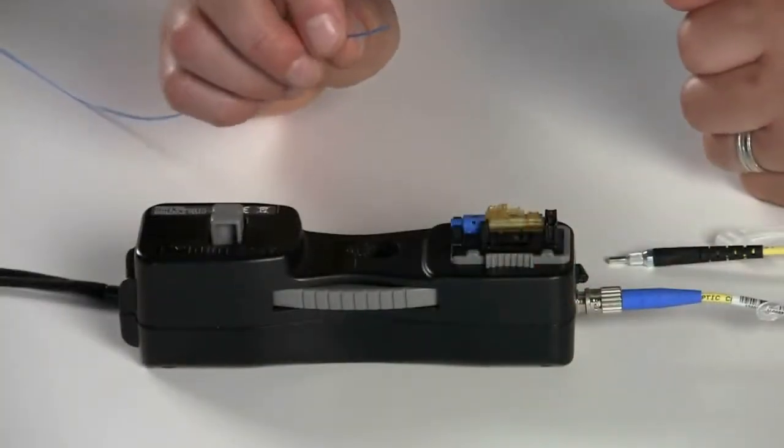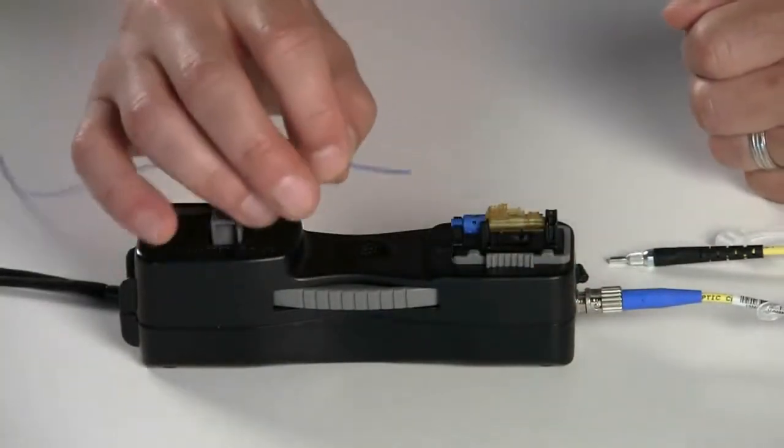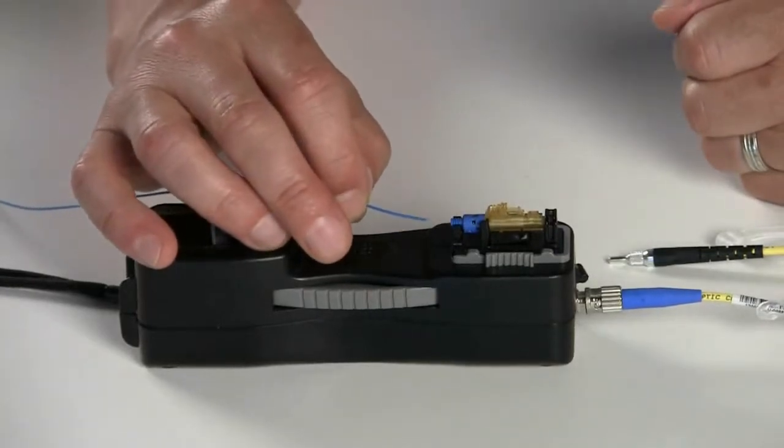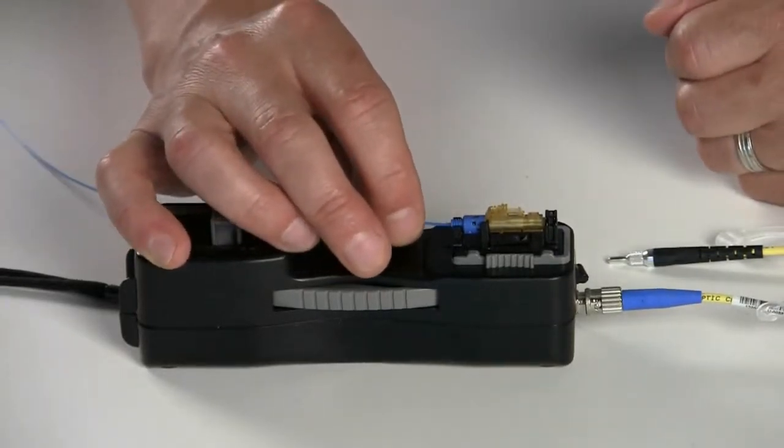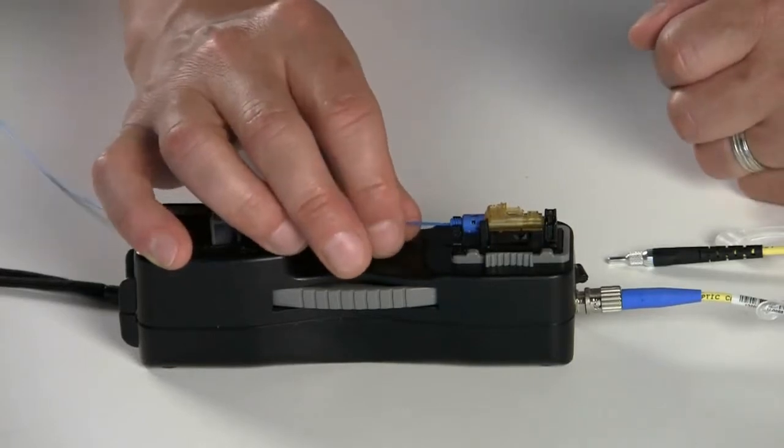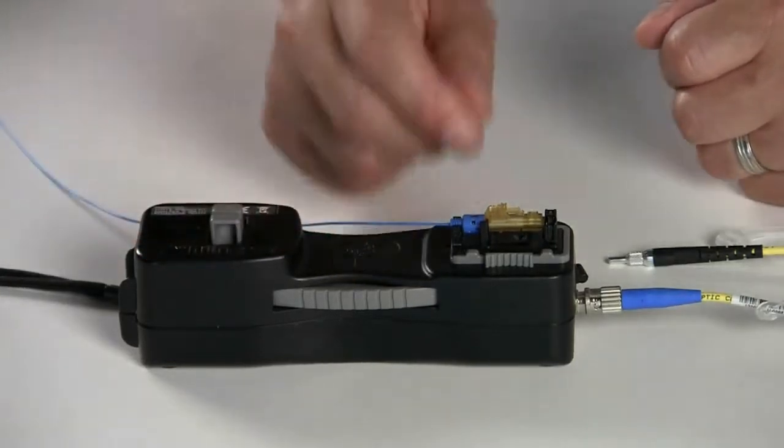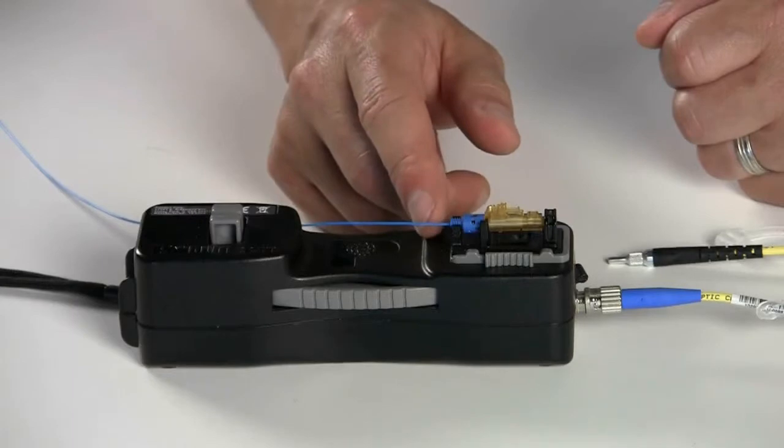After cleaving the fiber, it is time to insert the fiber into the OptiCam connector. Slowly guide the fiber into the back of the OptiCam connector and push forward until you feel a stop. This means proper end face mating between the fiber stub and the field stub.